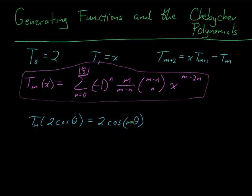If m is 1, this is 2cosθ, so if I plug 2cosθ into x, I get 2cosθ.